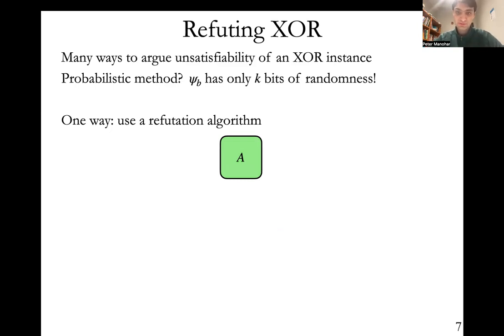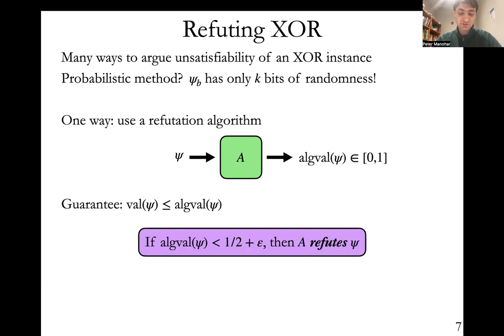One way to get around this is to use a refutation algorithm. There are many ways to argue unsatisfiability of an XOR instance, but refutation algorithms are one such way. What is a refutation algorithm? It's simply an algorithm A that takes as input an instance psi and outputs some value in [0,1]. And it has the following guarantee: the output of the algorithm is an upper bound on the true value of the instance, regardless of what the input is. Because of this, if the algorithm outputs something that's less than half plus epsilon, then we know that the true value of the instance is also less than half plus epsilon. And so then we'll say that the algorithm A has succeeded in refuting the instance psi.